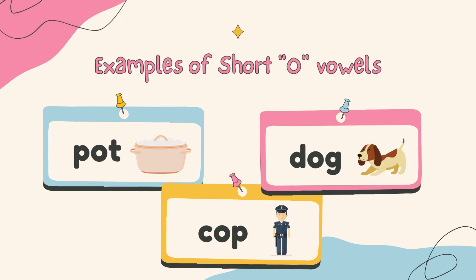For even more examples: P, O, T — pot. D, O, G — dog. K, O, P — cop. Pot, dog, and cop.